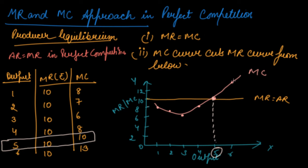These are the two situations to find the producer equilibrium in the case of MR and MC approach in perfect competition. This is how you will explain your producer equilibrium in perfect competition.